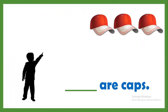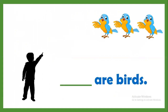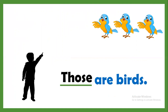Now caps are far from the boy, so what will come? Those are caps. T-H-O-S-E, those are caps. Now stars are near to the boy, so these are stars. T-H-E-S-E, these are stars. Now birds are far from the boy. Those are birds. We have to use those for far.